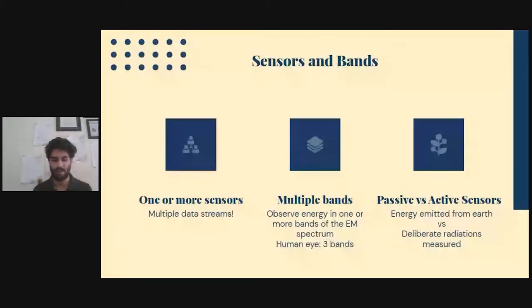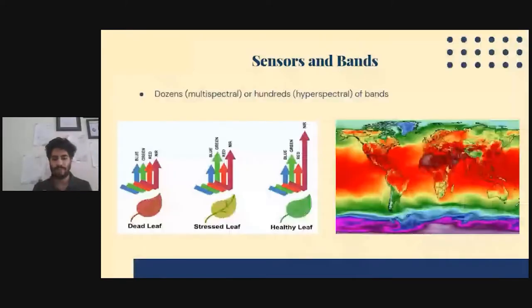The last distinction here is between passive and active sensors. The energy emitted from Earth and observed by satellites, these sensors are passive. And something like radar, which is deliberately sending radiations out and then measuring the reflection from the Earth's surface, these things are active sensors. You can have multiple bands there. If you have bands in the vicinity of dozens, these things are called multispectral. If you have hundreds of bands that you're looking at, these things are called hyperspectral images.